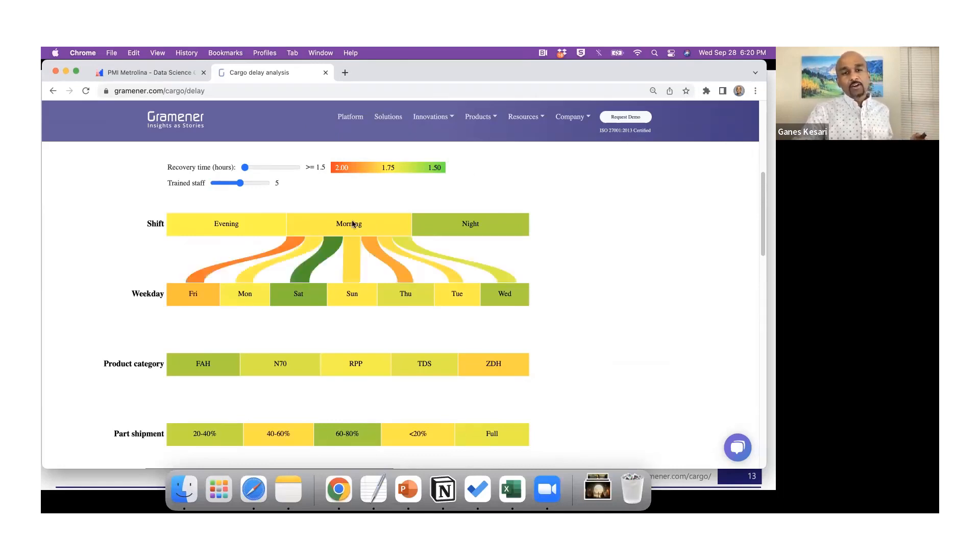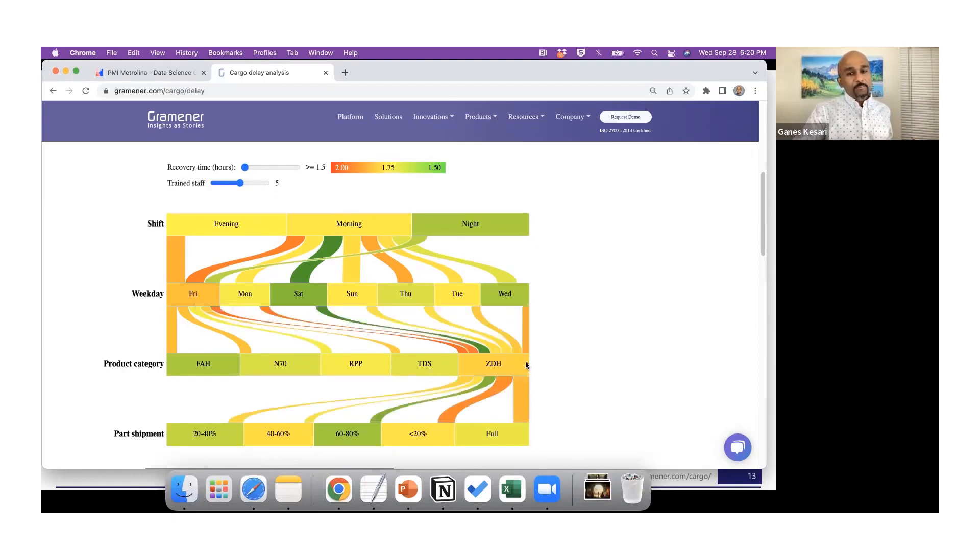And anything which is ZDH on a Friday morning—ZDH is fragile category—any fragile item shipped on a Friday is taking time. And any fragile item which is part shipped, less than 20, takes the most time to handle. So now with visual analytics you've identified the root cause. What do you do about it? If I increase the number of trained staff from five to six or seven, what happens?